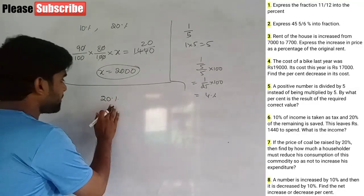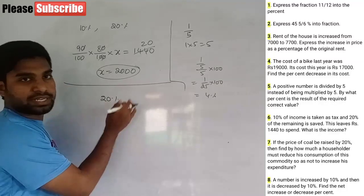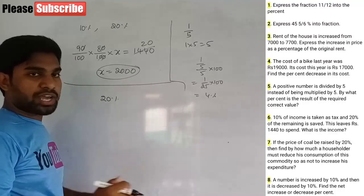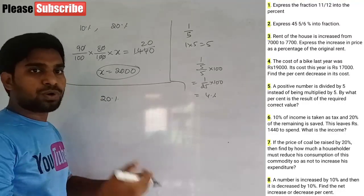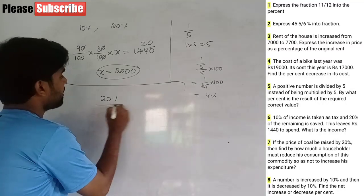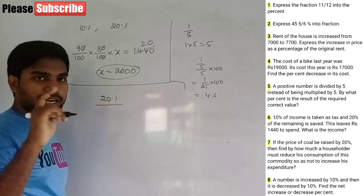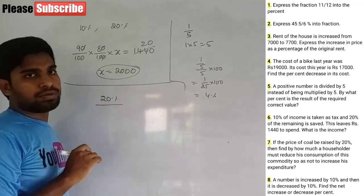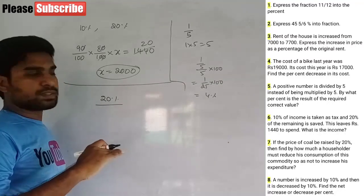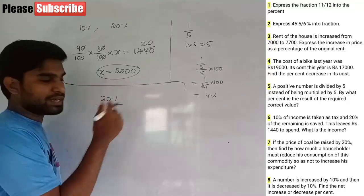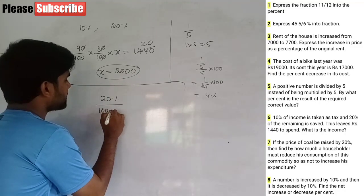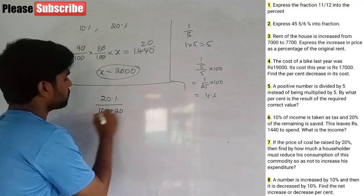If the price rises by 20%, we work with 100 plus 20, giving 120. The original expenditure is 100 into 100.